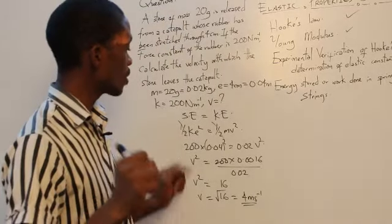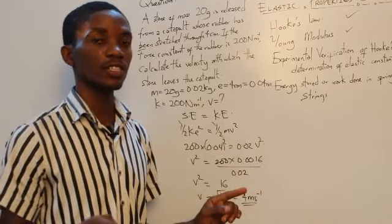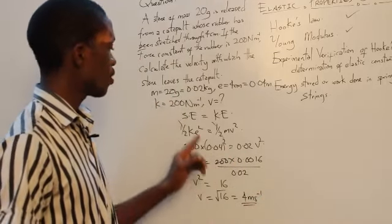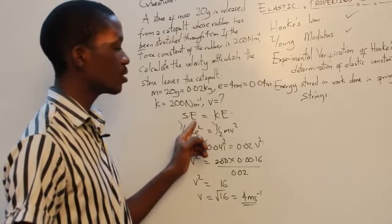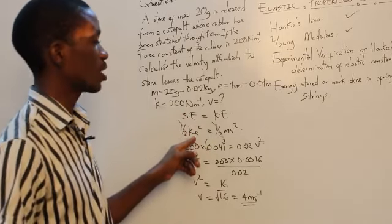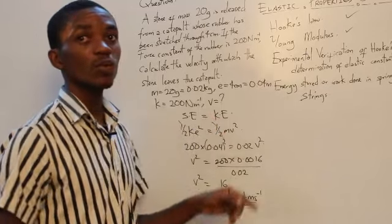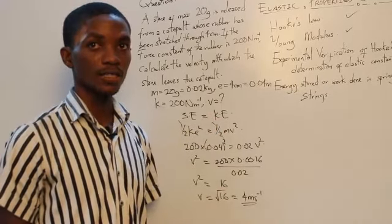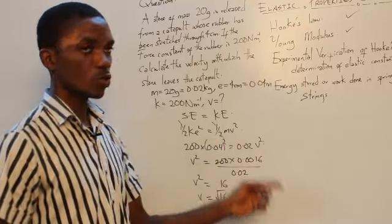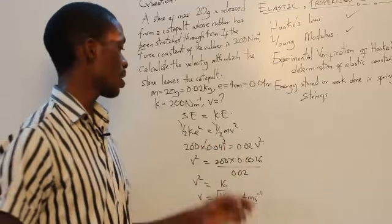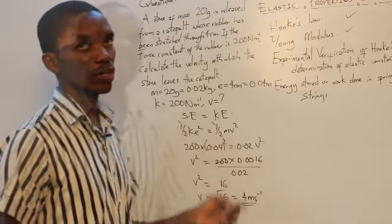Please bear in mind that we brought in two different energy formulas to solve this problem: the spring energy formula — half Ke squared — which we just learned, and the kinetic energy formula — half mv squared — which was taught in a previous class.